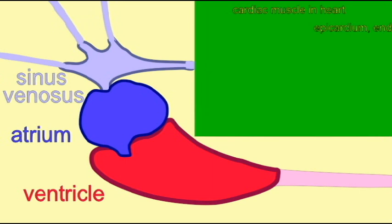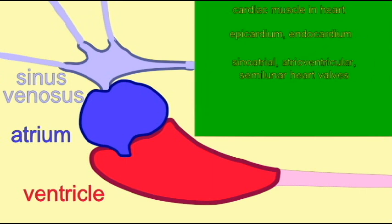In chordates, blood can flow in both directions. The sinus venosus is the site where the contraction of the heart is initiated.